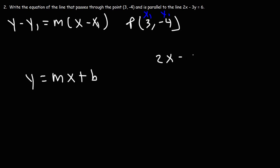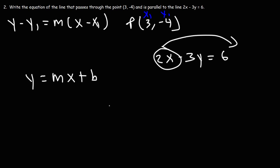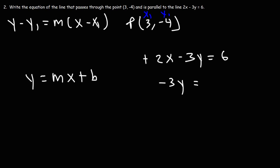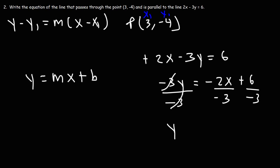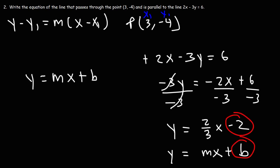Let's rewrite the equation: 2x minus 3y equals 6. First, move 2x to the other side — it changes sign, giving us negative 3y equals negative 2x plus 6. Then divide every term by negative 3. The two negative signs cancel, giving us y equals positive 2/3 x, and 6 divided by negative 3 is negative 2. Now in slope-intercept form, we can see the y-intercept is negative 2 and the slope is 2/3.